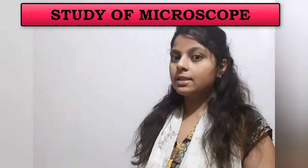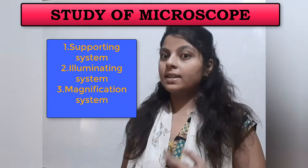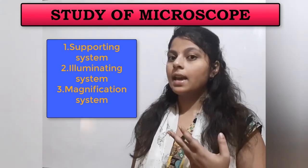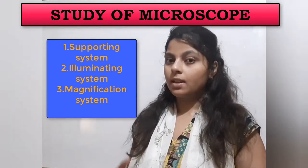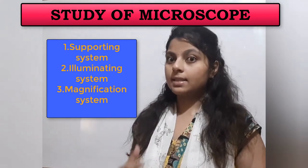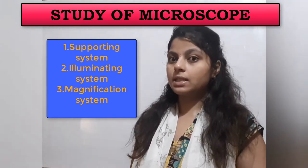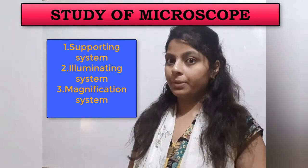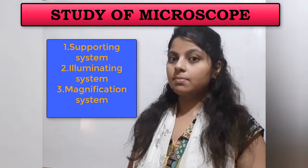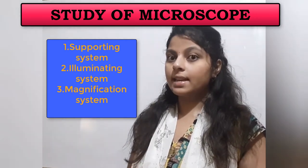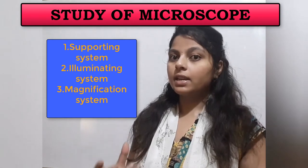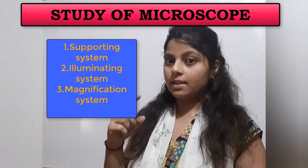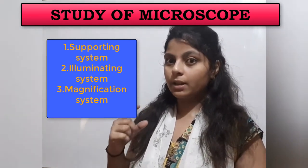The microscope contains three basic systems. One is the supporting system, the magnification system, and the illuminating system. The supporting system is nothing but the base, stage, and the body tube part of the microscope. The magnification system is the lens present near the slide, called the objective, and the eyepiece near the eyes where you see it.